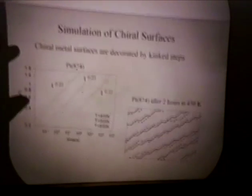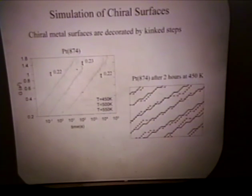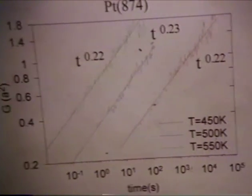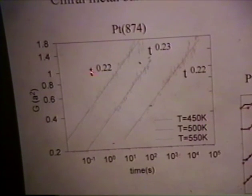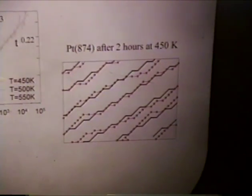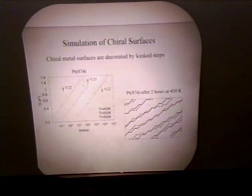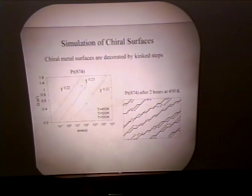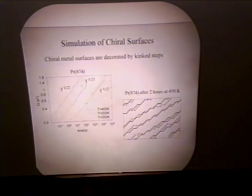Now we can move on to our main interest: what is the effect on chiral surfaces due to thermal roughening? The plot on the left is a log-log plot of G versus time, the kind of plots seen experimentally. We also see an exponent of around 0.25 as expected for periphery diffusion, but the more interesting thing is the timescale — we can simulate these systems on the order of several hours, reaching relevant experimental timescales. Here's a picture from the simulation of platinum 5874 after two hours at 450 Kelvin — the black line is the initial periodic step structure, and the dotted red line is the step structure after roughening, showing substantial change from the original step profile.